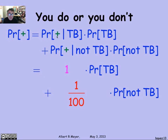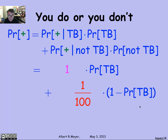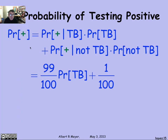Let's work through the total probability formula. The probability that the test comes in positive given that you have TB is 1, and the probability that the test comes in positive given that you don't have TB is 1/100 — that's the false positive rate. The probability that you don't have TB is simply 1 minus the probability that you do have TB. Working through the arithmetic, I wind up with a probability of TB plus 1/100 minus 1/100 of the probability of TB, leaving 1/100 plus 99/100 of the probability of TB. So the probability that the test comes in positive is (99/100) times the probability of TB plus 1/100.